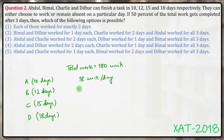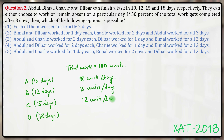Likewise, Bimal completes 180 units in 12 days, so his efficiency is 15 units per day. Charlie's efficiency is 12 units per day, and Dilber's efficiency is 10 units per day.